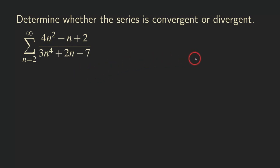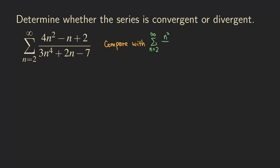So we are going to start by writing down the series that we are going to compare this original problem with. We're going to compare the series with this one here. The strategy is that we are going to look at the dominant terms. We don't even need the coefficient — all we need is the n squared in the numerator and n to the fourth in the denominator, which is a p-series.